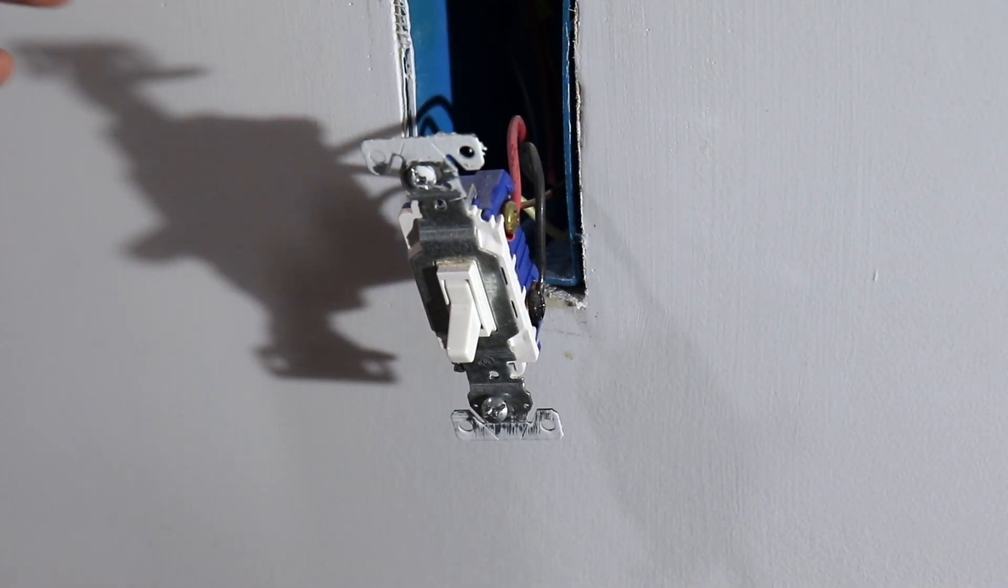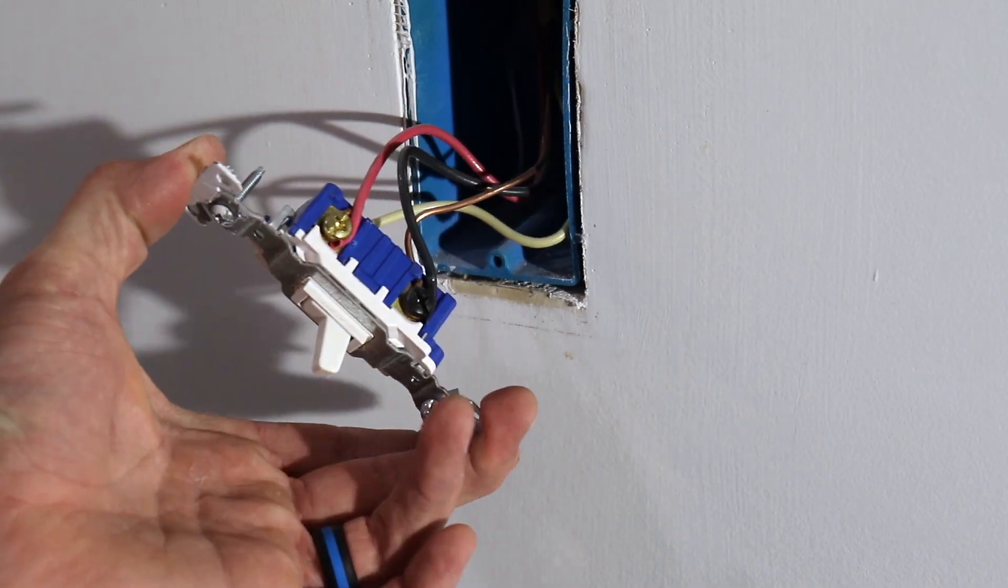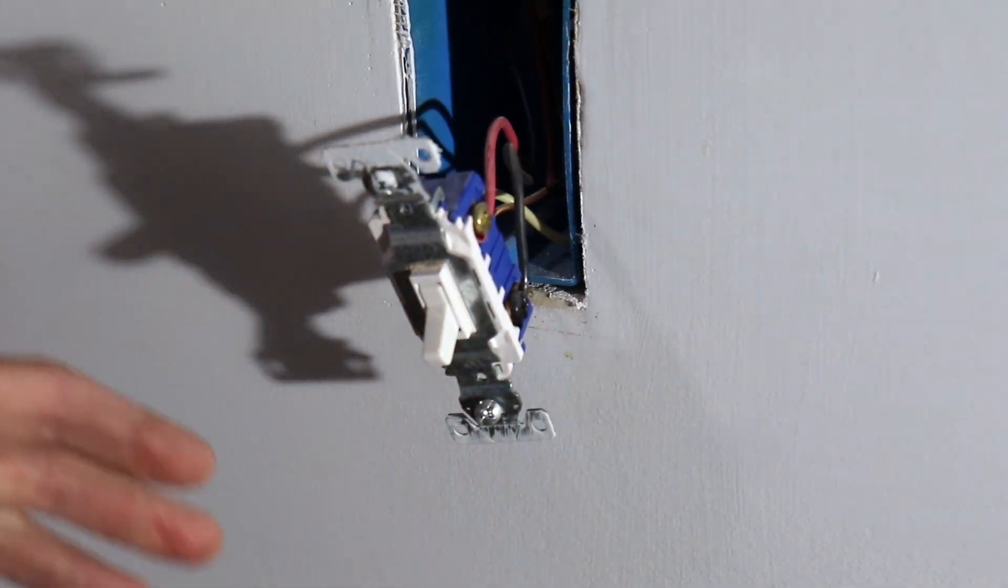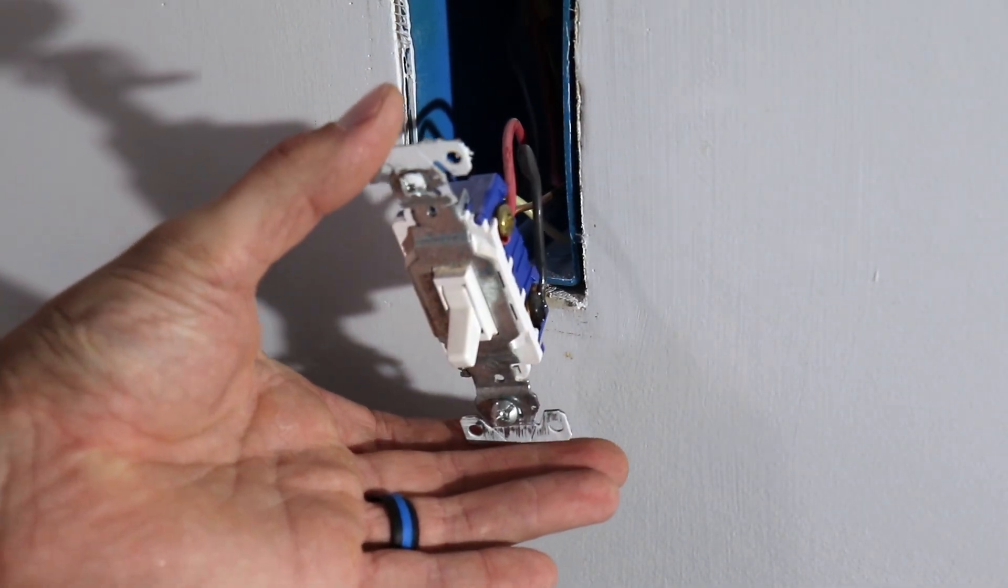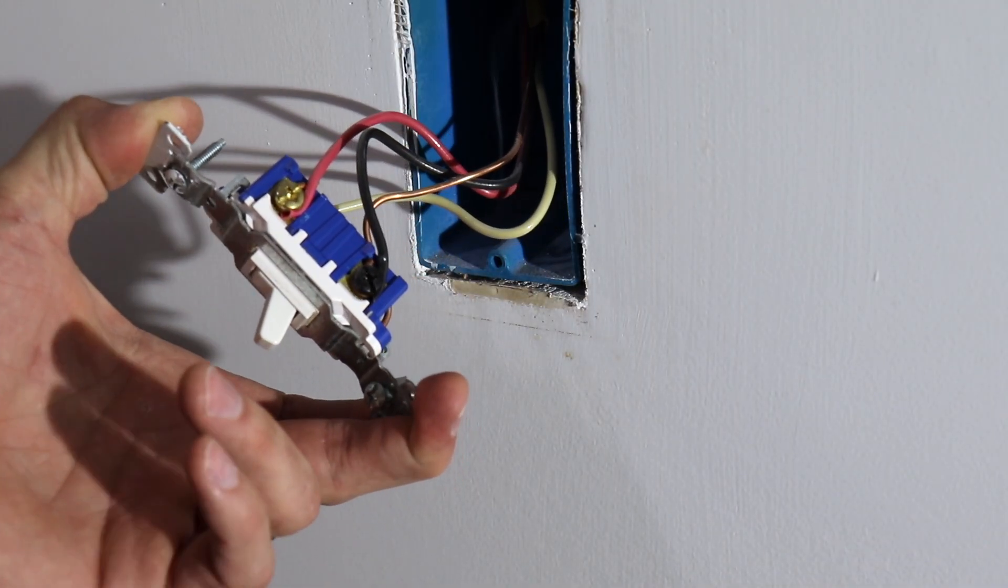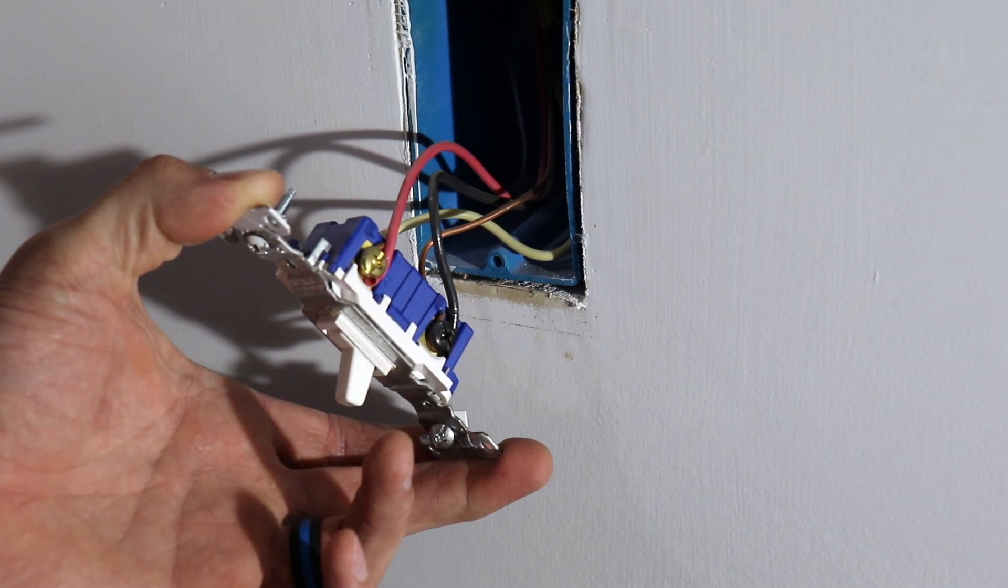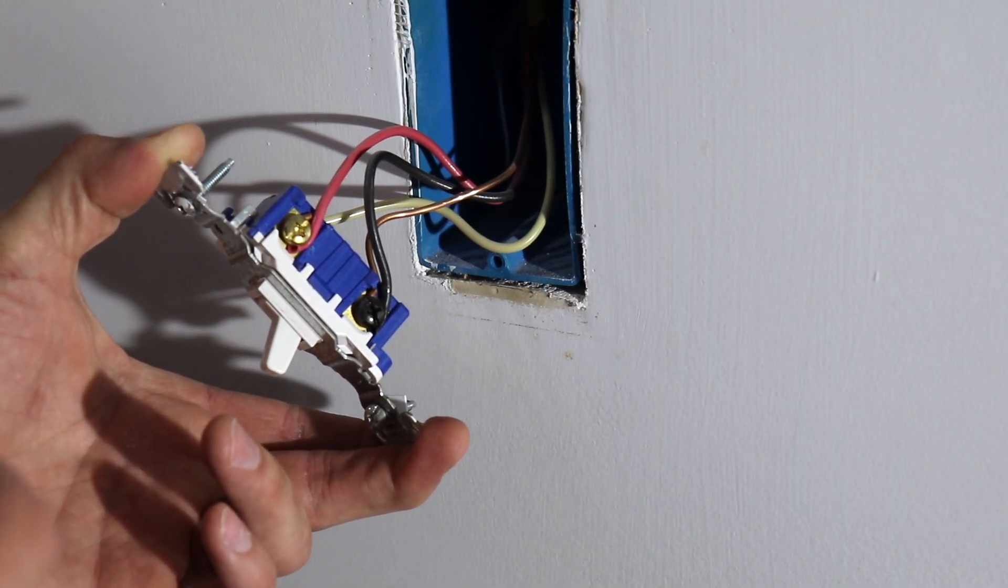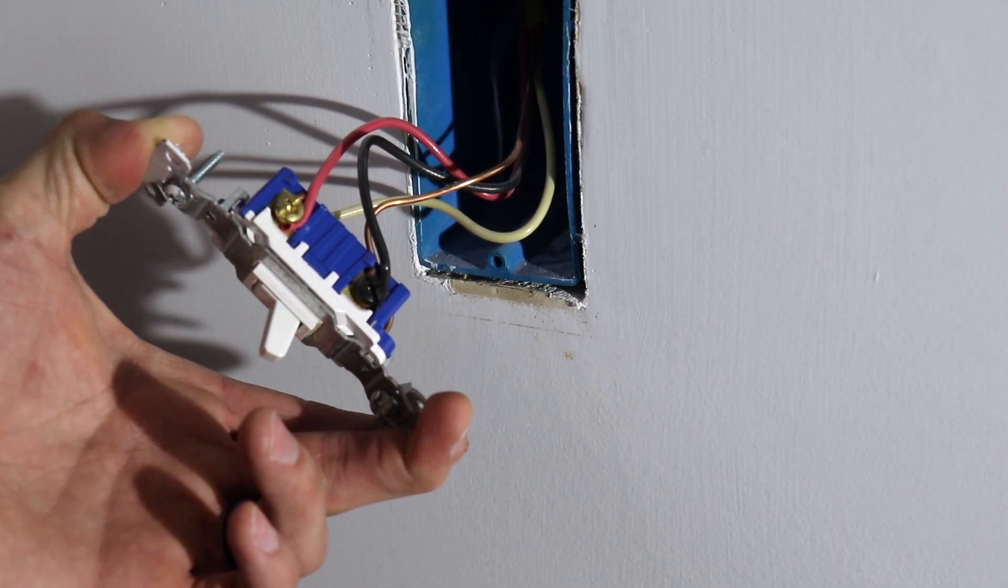All right, so now we've got the switch removed from the box. What we're going to want to do before we start unhooking all these wires is take note of which wire connects to the common terminal, because when we hook up our new three-way switch, we have to get this connection right or else it's just not going to work properly.